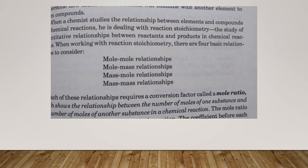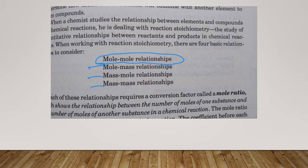They make it sound like there are four different types of problems we're going to have to solve. I want to simplify this little chart they have. The mole-to-mole relationship is really the key — that's the one we really need to understand. Mole-to-mass, mass-to-mole, and mass-to-mass just involve small variations of what you're always doing: mole-to-mole. If they give you mass, convert it to moles. If the answer comes out in moles and they want mass, just do a conversion at the end. We really only have one type of problem: mole-to-mole.